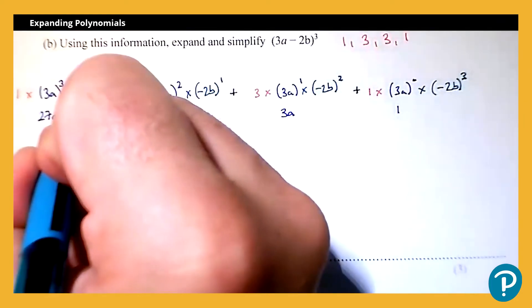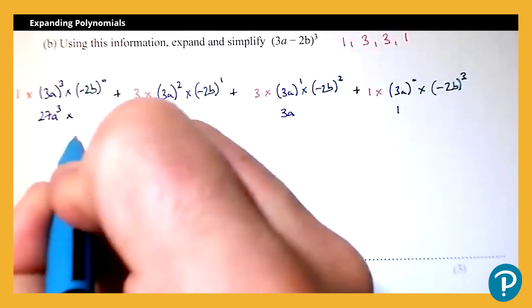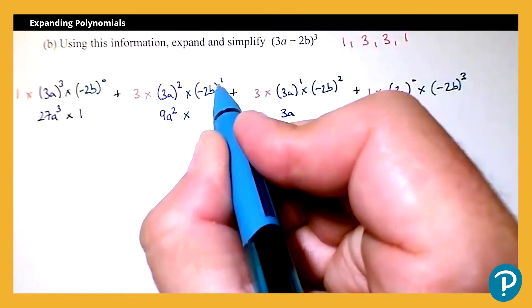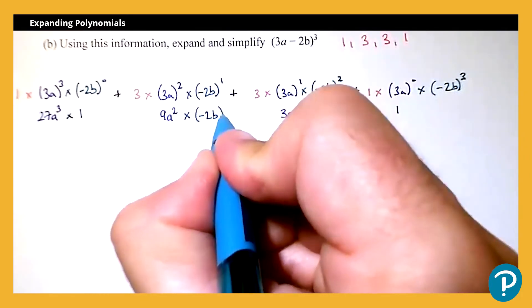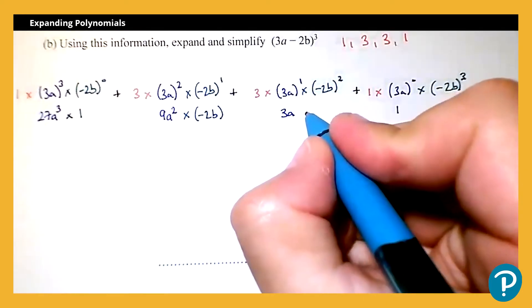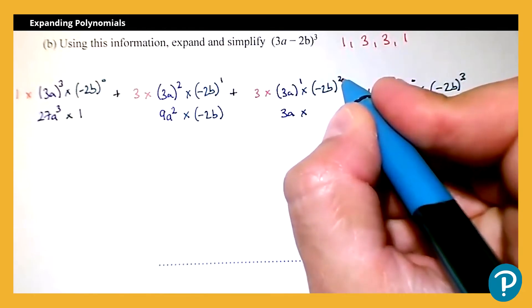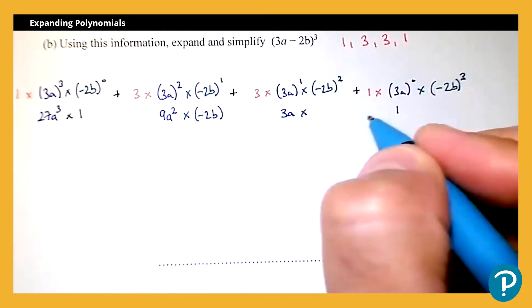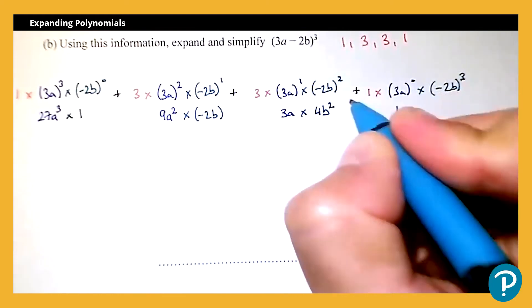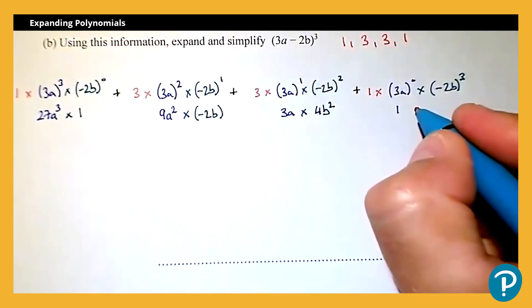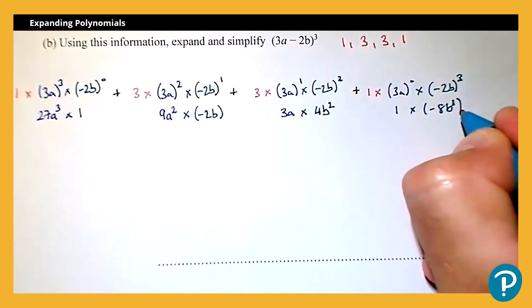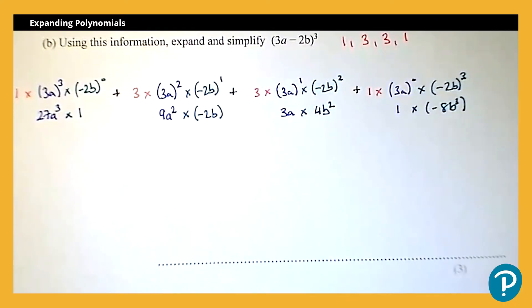Now the second set of brackets: (−2b)⁰ is 1. (−2b)¹ is −2b — I'll leave that in a bracket to remind me I'm multiplying by a negative. (−2b)² means −2b × −2b: squaring a negative gives a positive, so we get 4b². And (−2b)³ is −8b³ — I'll put that in a bracket too as a reminder.